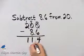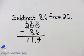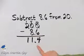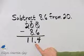And then we line up decimal points, and there's the decimal point in my difference. The difference is 11 and 4 tenths.